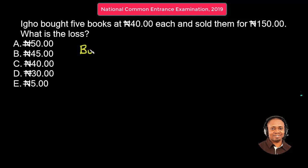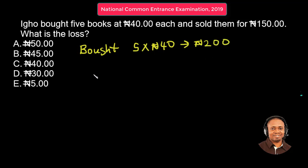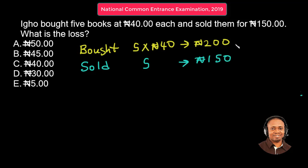So we're told that he bought 5 books at 40 Naira each. This amounts to 200 Naira — we just multiply 5 by 40. And we're also told in the concluding part of that statement that he sold these 5 books for 150 Naira. 150 Naira shows a difference of 50 Naira, so this is the loss that Hugo had.